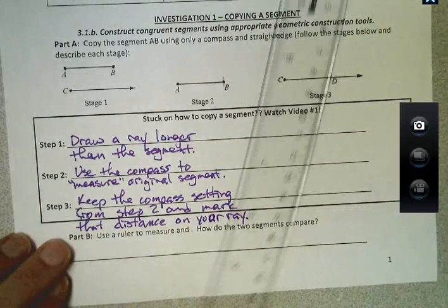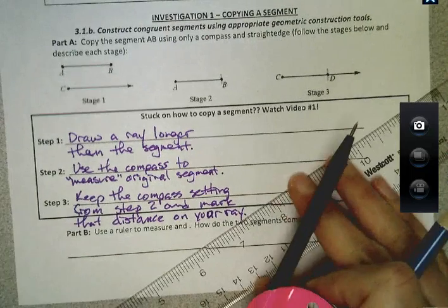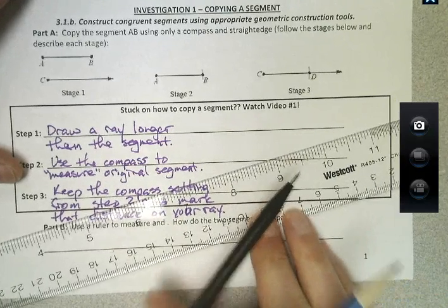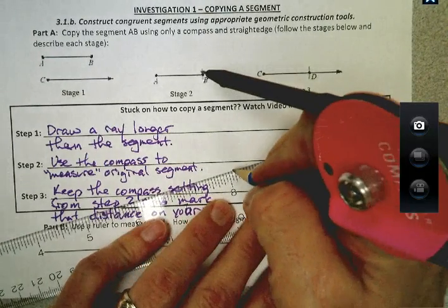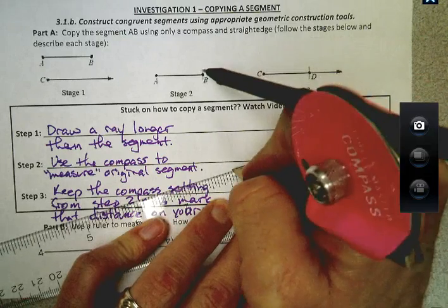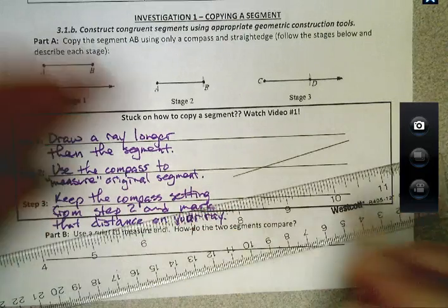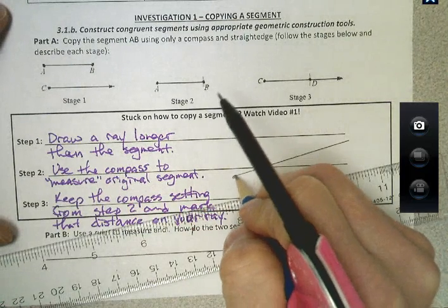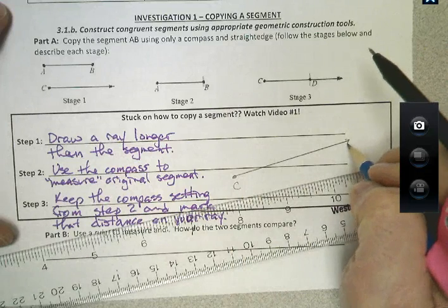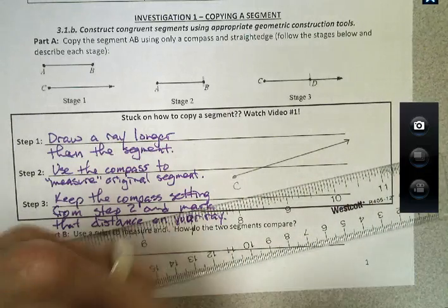So the first thing that we're going to do is draw the ray. I'm just going to use this entire area here and I'm going to draw my ray. Really doesn't matter which way it goes. I'll call this point C and we can put an arrow here. We don't really need it but you can put it there.